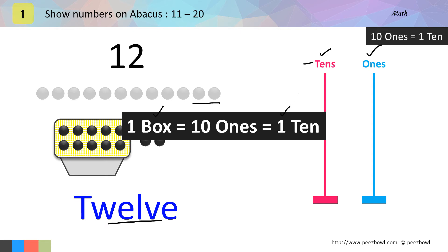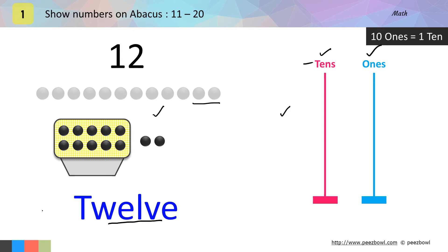So for each box, I will draw 1 circle on the tens line. As we have 1 box here, I will draw 1 circle on the tens line. Remember, the number of boxes will come at tens place and number of loose balls will come at ones place.